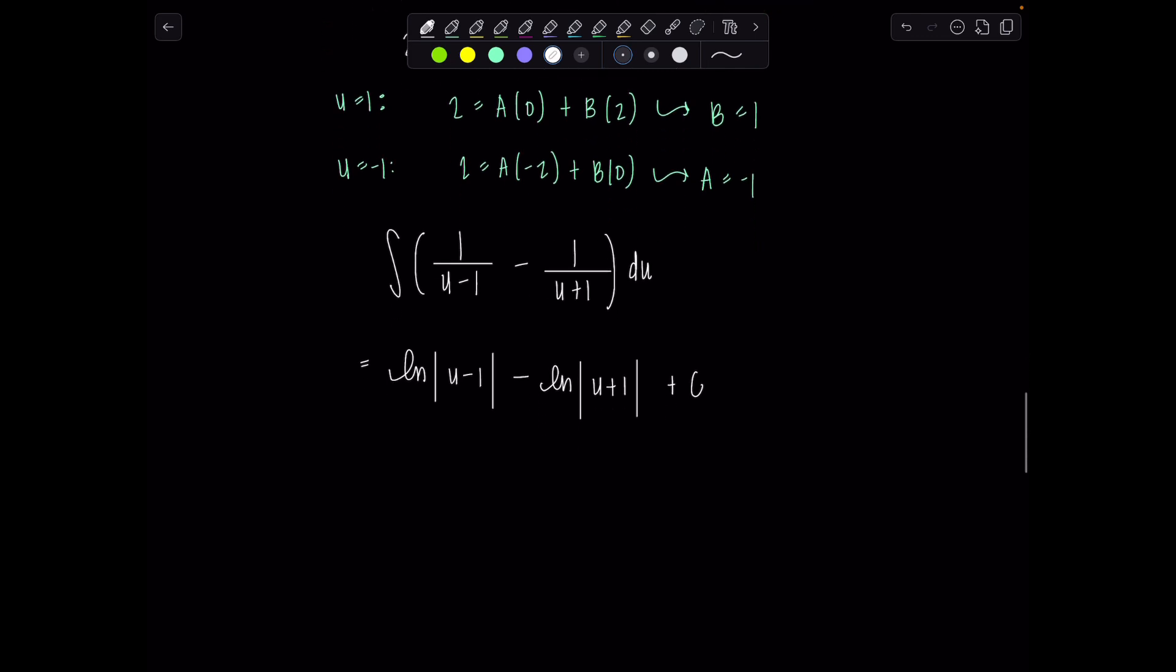And then go back, replace u with what it originally was, which was square root of e to the x plus 1 minus 1 minus ln absolute value square root e to the x plus 1 plus 1 plus c.